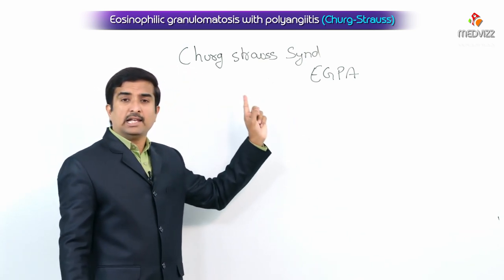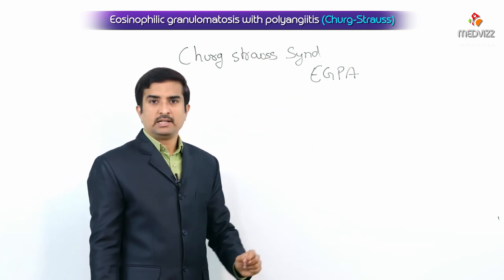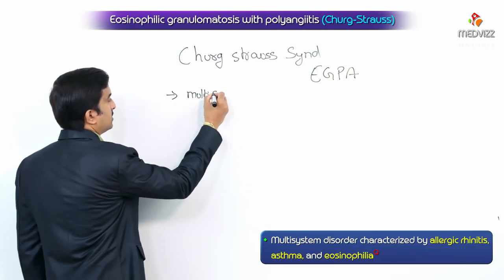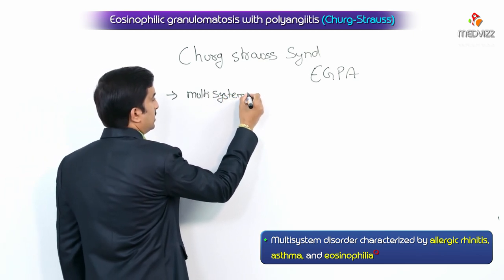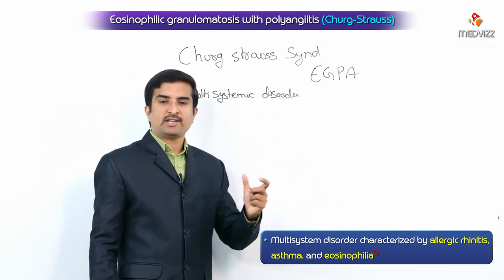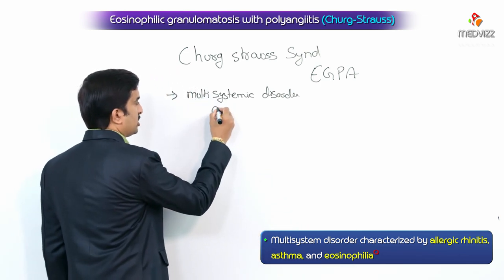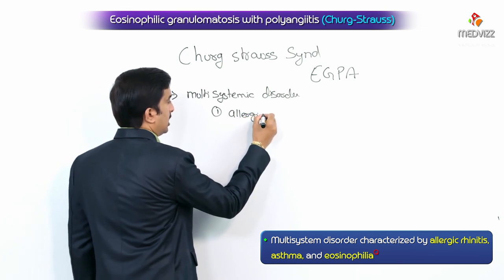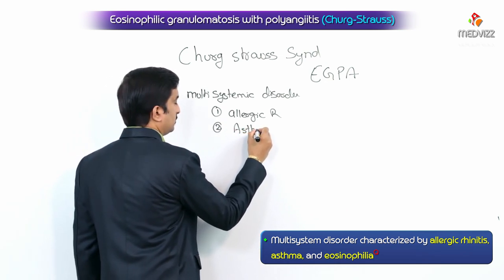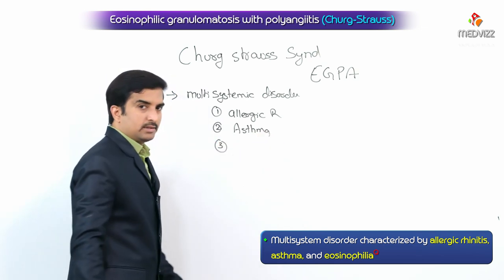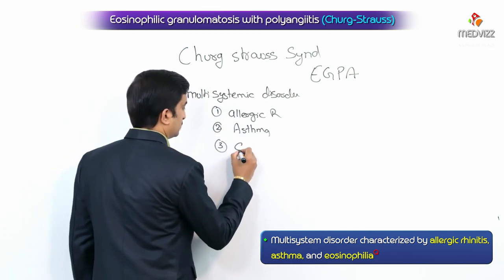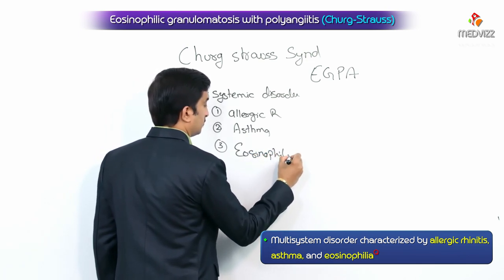It is also called as allergic granulomatosis and angiitis. Remember that it is a multisystemic disorder characterized by three important symptoms: allergic rhinitis, asthma, and prominent peripheral blood eosinophilia.